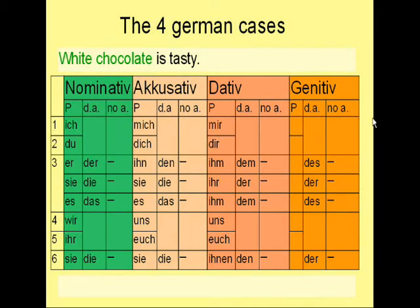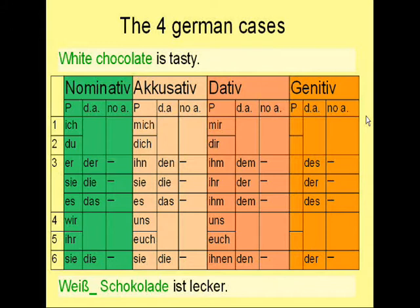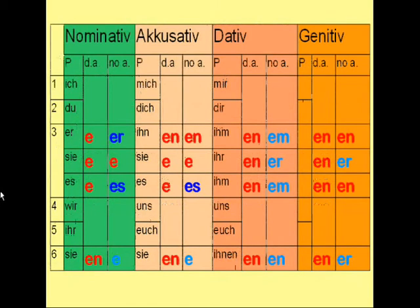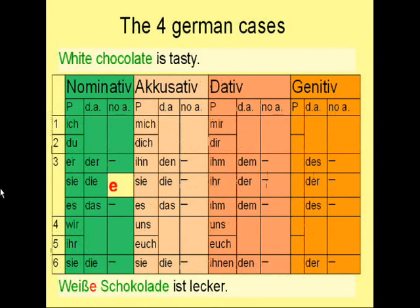Now we can start to translate the sentence. It starts as: Weiß Schokolade ist Lecker. Something is missing — the ending for the adjective 'white,' which means Weiß in German. We look at the table under feminine nominative for no articles, and the ending is E. So the sentence reads correctly: Weiße Schokolade ist Lecker.